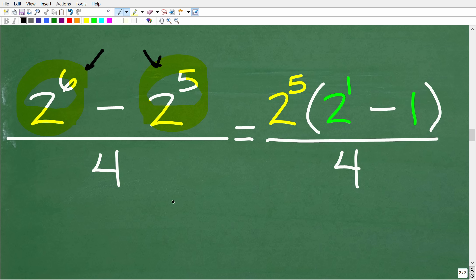And the greatest common factor between these two values is 2 to the 5th power. Now, if you don't understand factoring and the greatest common factor, you may want to do some review. This is critically important, especially in algebra. But basically, we can factor out a 2 to the 5th from this difference. So 2 to the 5th times parentheses 2 to the 1st minus 1 is this numerator factored.